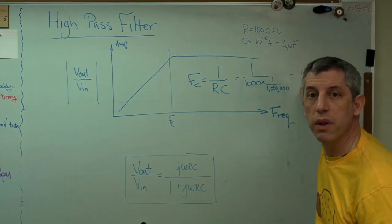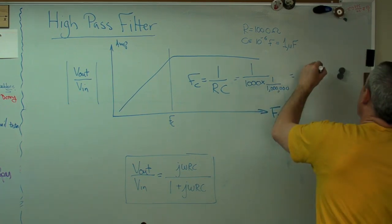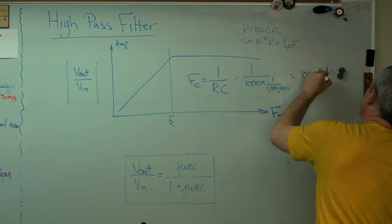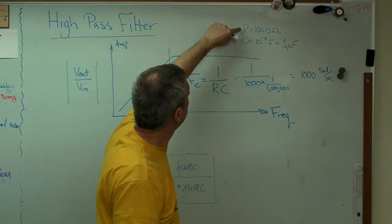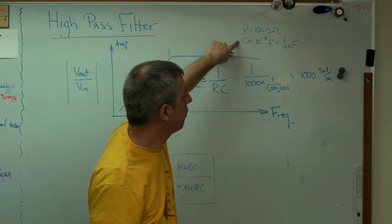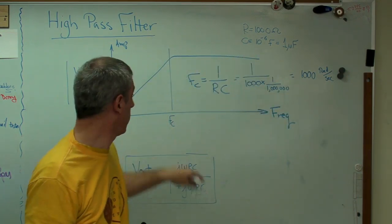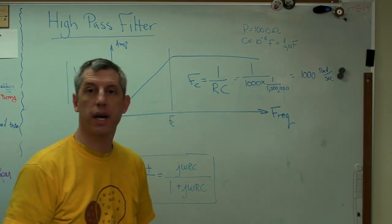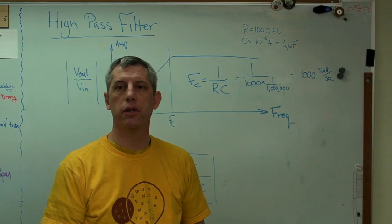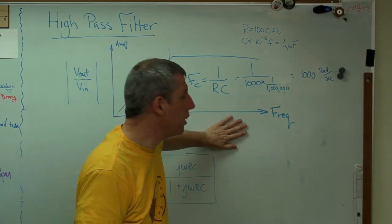Now remember, this is 1,000-somethings. This is 1,000 radians per second. That would be your cutoff frequency. If I had a value of 1,000 ohms and 1 microfarad, my cutoff frequency right here would be 1,000 radians per second. And if you want to know what that is in Hertz, just divide by 2 pi. So there you go.